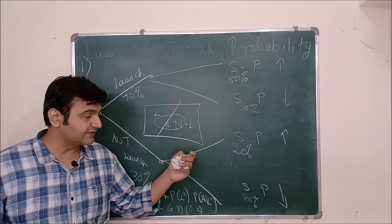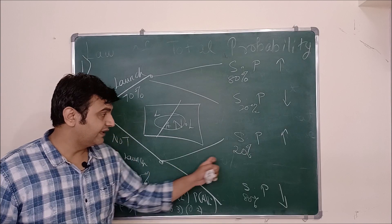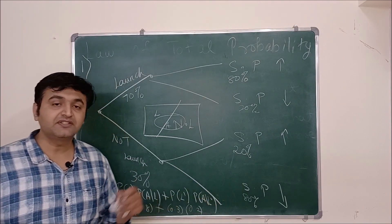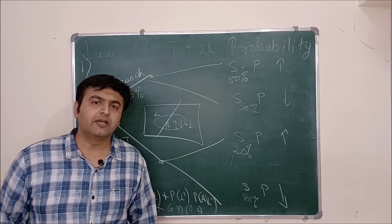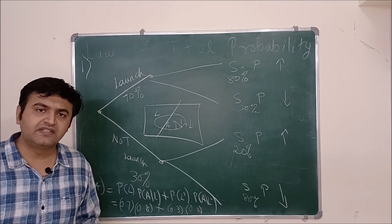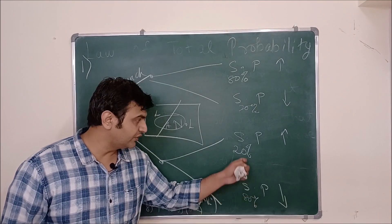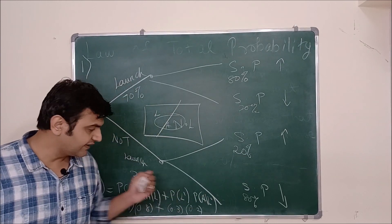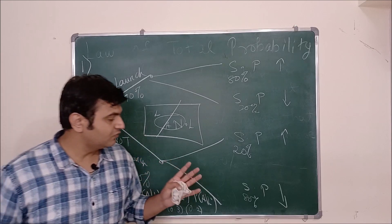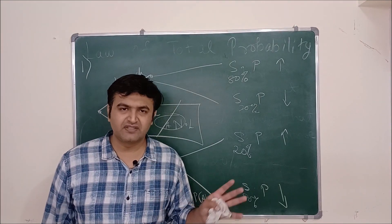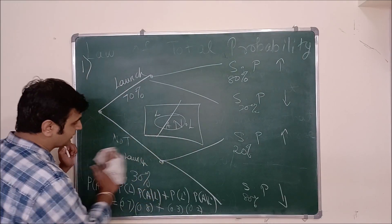Now suppose in the earlier case, if the product is not launched and investors are unhappy, the stock price decreases by 40%. So the non-decrease probability becomes 60%, and you can extend the tree diagram and solve the problem in the same way. That's how one can play with these problems. I hope the idea is clear. Now let's go to the next problem.